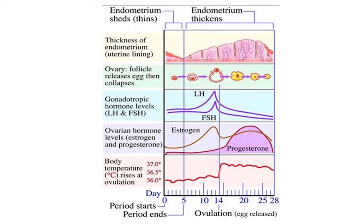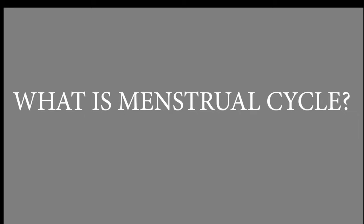These gonadotropins are follicle stimulating hormone and luteinizing hormone. The ovarian hormones, which are progesterone and estrogen, act on the uterine endometrium to cause the changes that we see during menstrual cycle. Menstrual cycle is cyclical changes that occur in the uterine endometrium of every woman of childbearing age from puberty to menopause every 28 days.